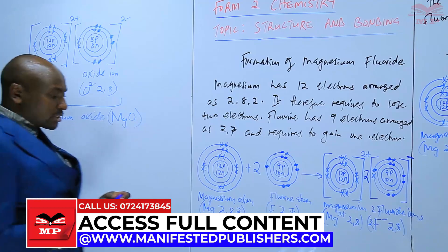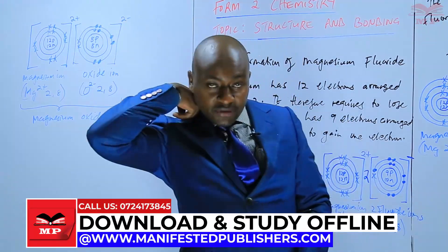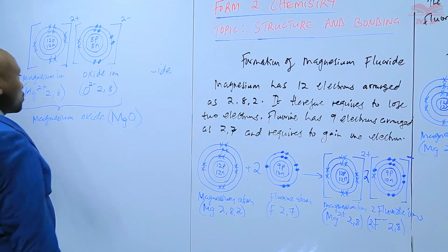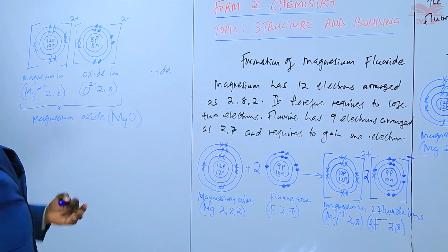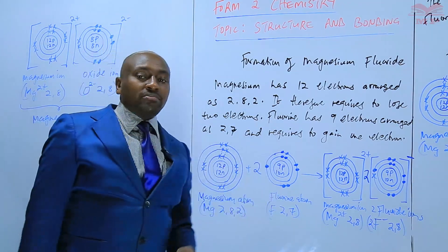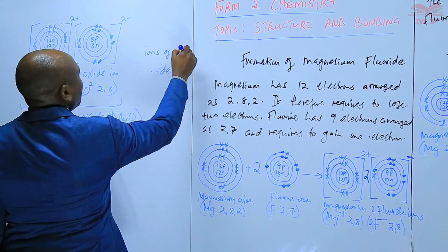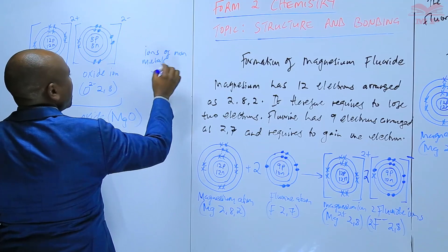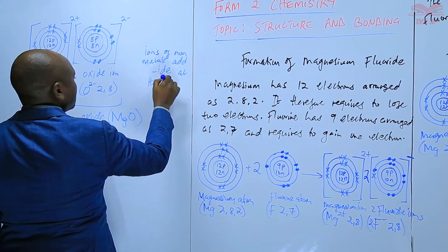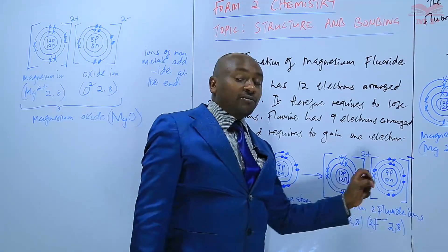This is something important to note: for non-metals, when they form their respective ions, their name changes a bit and we add IDE at the end. For oxygen, we have oxide. For chlorine, chloride. For fluorine, fluoride. But for the metals, the name just remains: magnesium remains, calcium remains, sodium remains. But for the ions of non-metals, these are the ones that we add IDE at the end. Hence oxide, not oxygen ion, but oxide ion. Not fluorine ion, but fluoride ion.